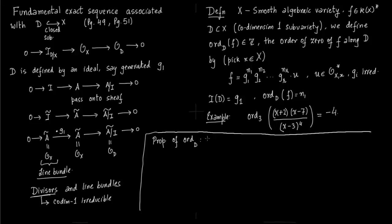Now I want to copy down some properties of this order function which we've just defined from K(X)* to integers. Most of these properties you can find on page 152-153 of Shafarevich's book, Algebraic Geometry.